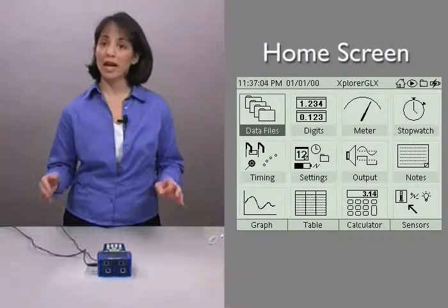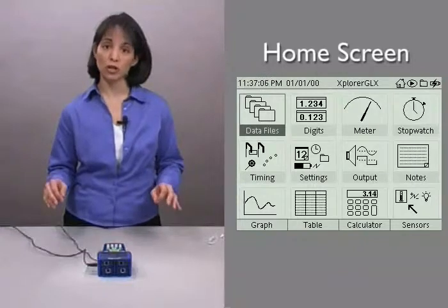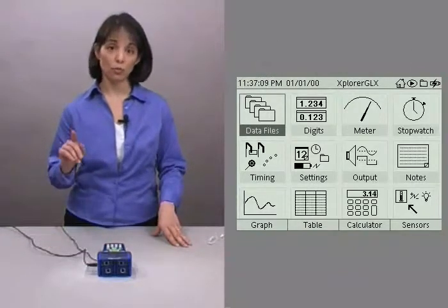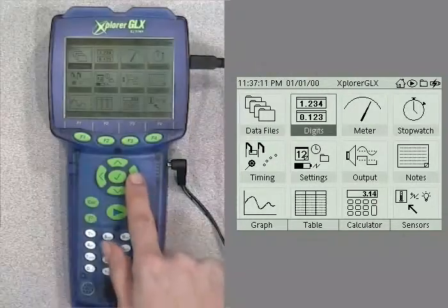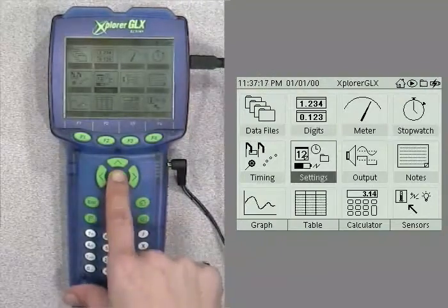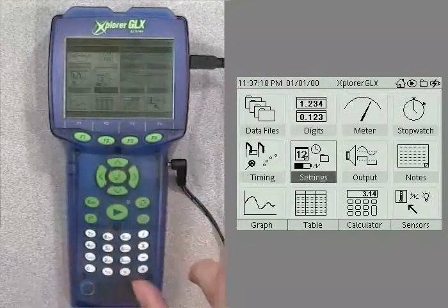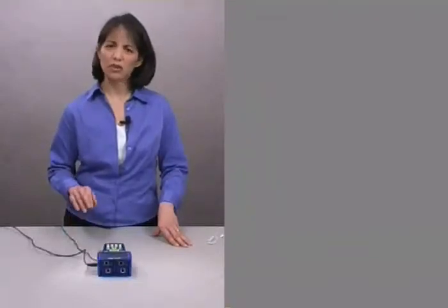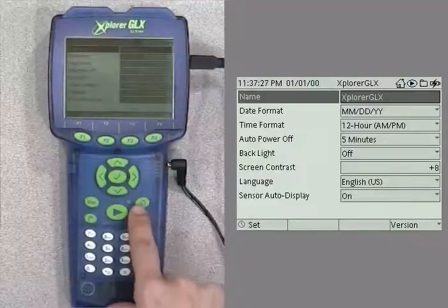From this screen you can access any of the 12 GLX screens represented by these 12 icons. To move through the icons, push the arrow keys. To open up one of the screens, push the check mark after you've selected it. Remember that at any time, even during data collection, you can get back to the home screen by pushing this home button.